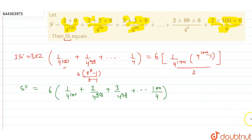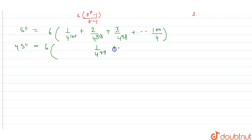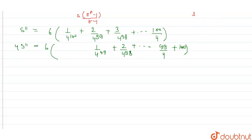To solve S double dash, we multiply by 4 to shift the series. So 4·S double dash equals 6 times: 1 upon 4 to the power 99, plus 2 upon 4 to the power 98, and so on up till 99 upon 4, plus 100.